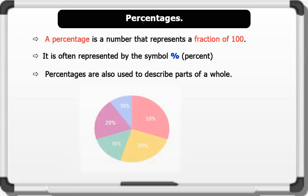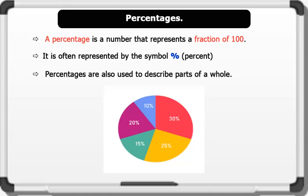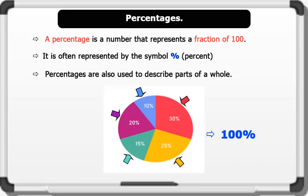As shown in the diagram below: pink color is 30%, yellow color is 25%, green color is 15%, purple color is 25%, and blue color is 10%. All these parts sum up to give the whole of 100%. Now let's see how to convert fractions to percentages.